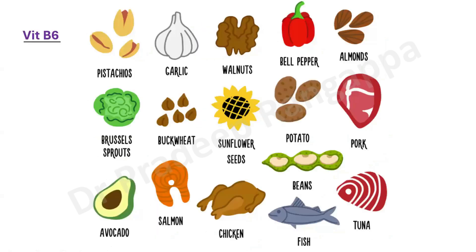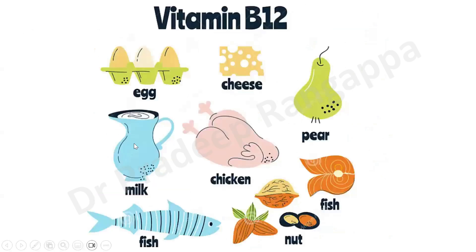For vitamin B6, good sources include nuts such as walnuts, garlic, pistachios, and almonds, as well as chicken, fish, meat, and avocado. For vitamin B12, it is predominantly found in animal products — milk, cheese, and yogurt for vegetarians, and fish (which has the highest B12 content), chicken, and nuts. If you want both pyridoxine and B12, nuts — walnuts, pistachios, and almonds — are a good source for all these vitamins.